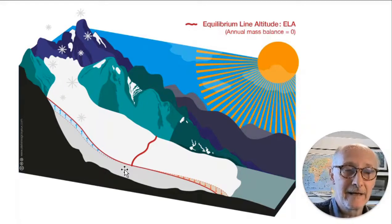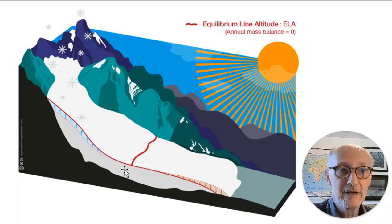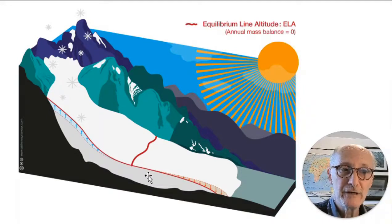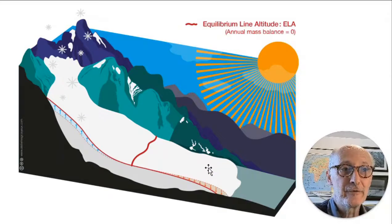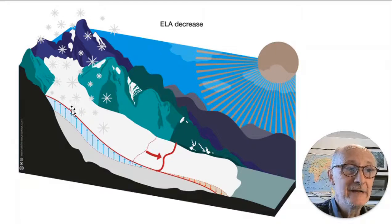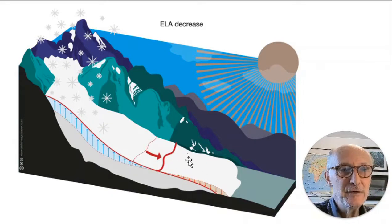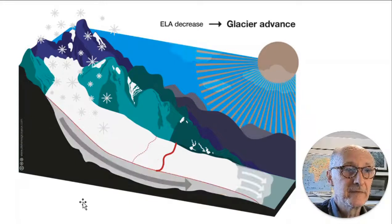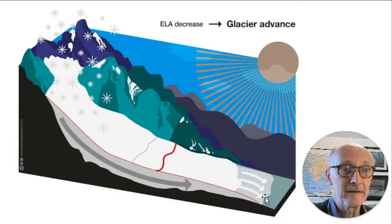The ELA is a very important concept when thinking about how glaciers advance and retreat in response to climate change, because changes in the position of the equilibrium line change the accumulation area ratio — the ratio between the size of the accumulation area where the glacier is being fed and the ablation area where it is losing material. If the ELA decreases, the altitude of the equilibrium line lowers, then the accumulation area increases, giving a greater amount of input, and the ablation area shrinks. In that situation, other things being equal, you'd expect the glacier to be healthy and advancing.